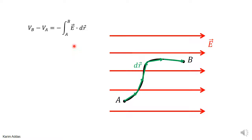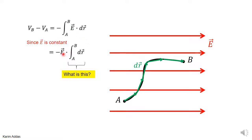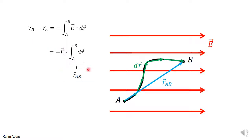What is so specific about a constant or uniform electric field that makes it easy to get the answer? Since E is a constant vector — it's uniform — you can take the electric field out of the integration with the dot product, leaving you with the integration of dR. Integration means you're adding this dR, and adding this dR, and this vector, and this vector, and this vector.